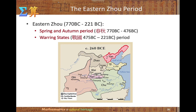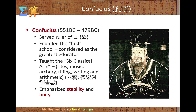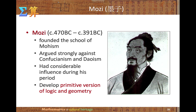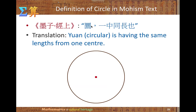In the Eastern Zhou dynasty, there were two periods: the Spring and Autumn period and the Warring States period. In the Spring and Autumn period, Confucius served the ruler of Lu. He founded the first school and was considered the greatest educator. He taught the six classical arts: rites, music, archery, charioteering, writing, and arithmetic. He emphasized stability and unity. Mozi founded the school of Mohism and argued strongly against Confucianism. He developed primitive versions of logic and geometry — for example, suggesting that a circle has the same distance from one center point.